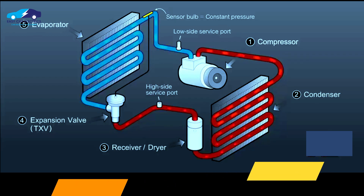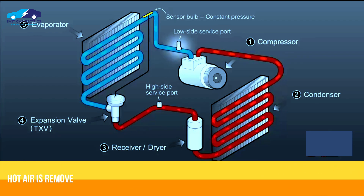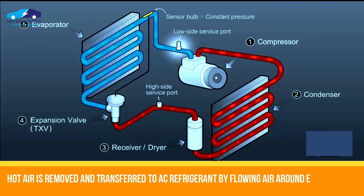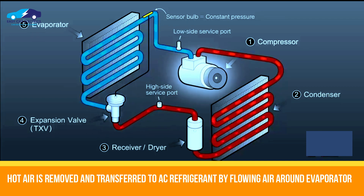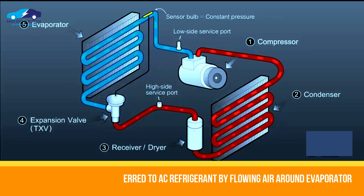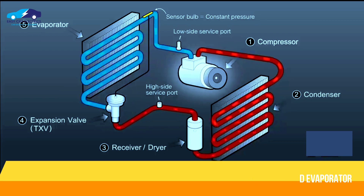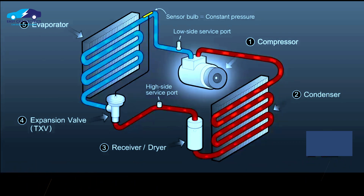The cabin's hot air heat is removed and transferred to the AC refrigerant by air flowing around the evaporator. Hence the cabin air is cooled and humidity is also removed from the air.